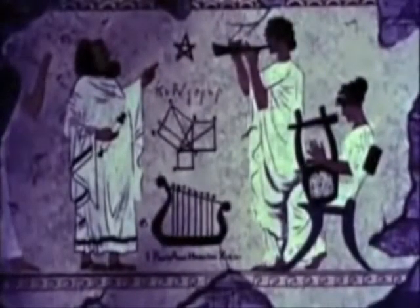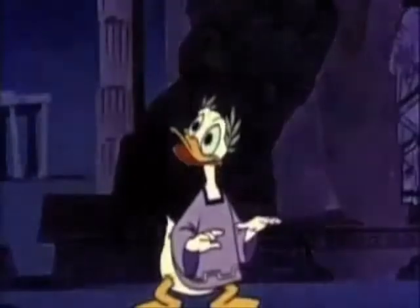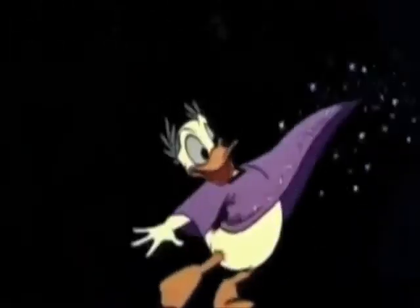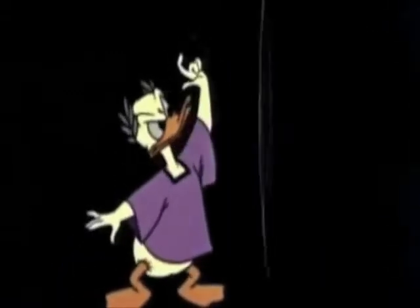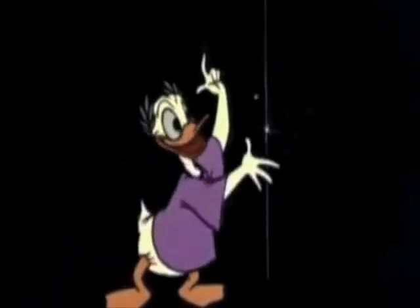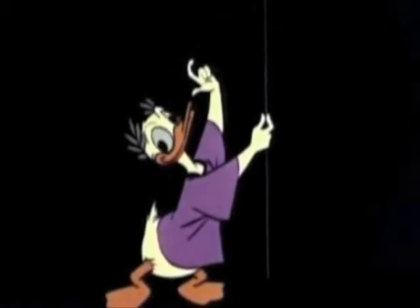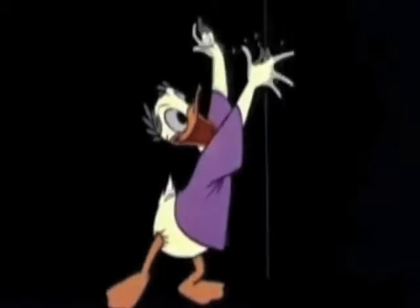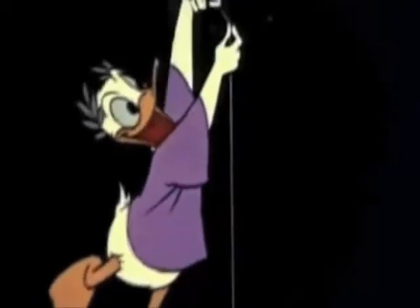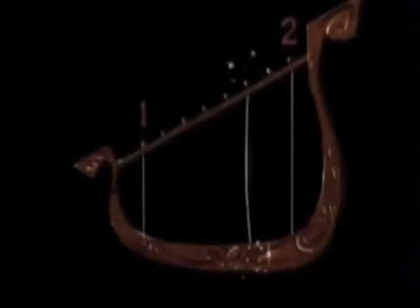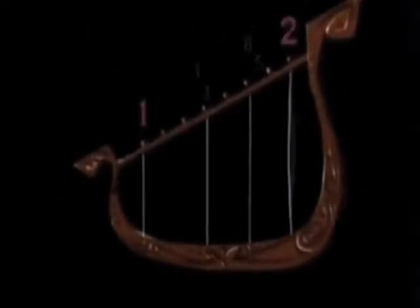Troverai la matematica nei luoghi più impensati. Per prima cosa ci vuole una corda. Tendiamola per benino, pizzicala. Ora dividiamola a metà, pizzicala di nuovo. Sentito? Lo stesso tono, ma un'ottava più alta. Dividiamo il resto, e poi ancora. Pitagora scoprì che l'ottava era in rapporto di due a uno con la lunghezza della corda. Un semplice calcolo frazionario lo portò a questo risultato.